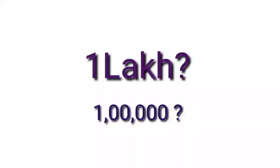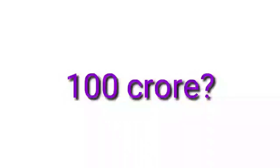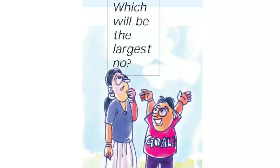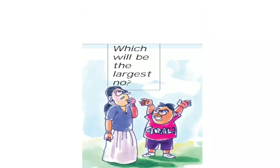So let me ask: which is the largest number you know? Is it thousand, ten thousand, one lakh, one crore, hundred crore? Putting nine zeros after one, we get hundred crore. If we put ten zeros, we get thousand crore. So we can't really say what the biggest number is.